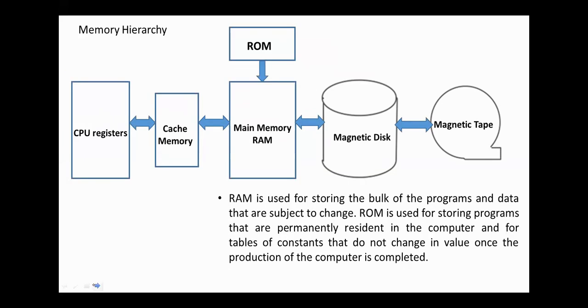RAM is used for storing the bulk of the programs and data that are subject to change. ROM, read-only memory, is used for storing programs that are permanently resident in the computer and for tables of constants that do not change in value once the production of the computer is completed. ROMs are also used to store the bootstrap program.